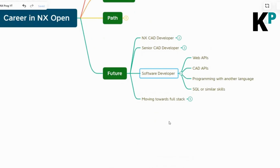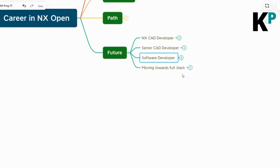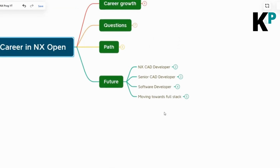Then you jump into the role of a pure software developer — someone very good at programming who knows not just one programming language but a couple. You also get familiar with other technologies, maybe from web development alongside CAD development. You also get good at databases, for example SQL or similar. Your technology area is increasing, making you a well-rounded software developer.